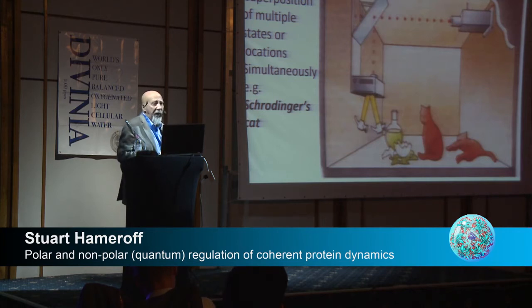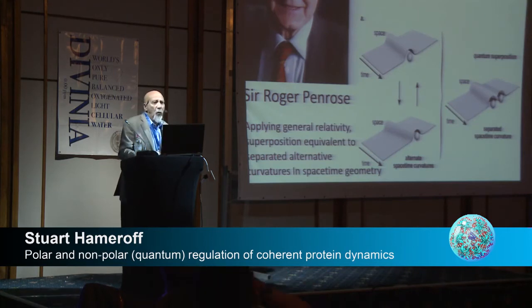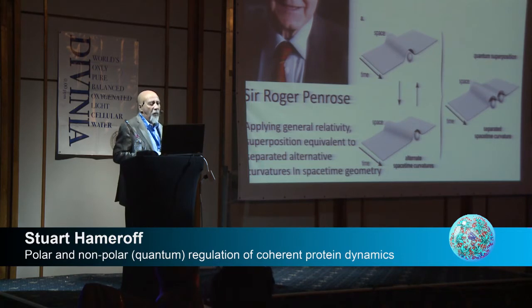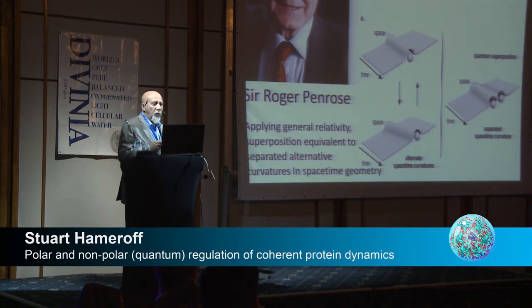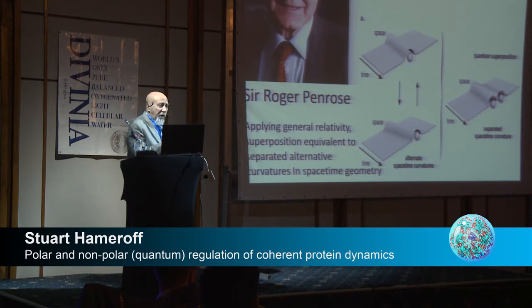This is known as the measurement problem in quantum mechanics — for example, Schrödinger's cat. The only answer I've ever seen is given by Sir Roger Penrose, who applied general relativity, where a particle is curvature in space-time. A particle in two places at once would be curvature in opposite directions — the particle oscillates between positions, and superposition means two alternative curvatures in space-time geometry. Space-time actually separates.